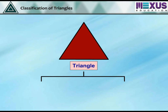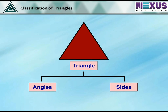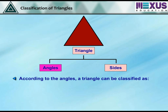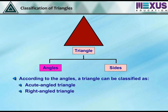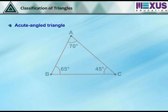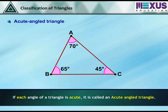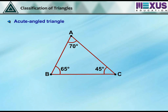Triangles can be classified according to their properties of angles and sides. According to the angles, a triangle can be classified as an acute angle triangle, right angle triangle or obtuse angle triangle. If each angle of a triangle is acute, it is called an acute angle triangle. The figure shows an acute angle triangle as each of its angles is less than 90 degrees.